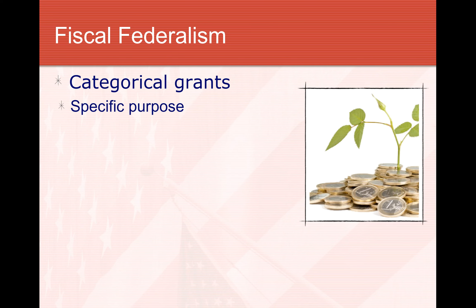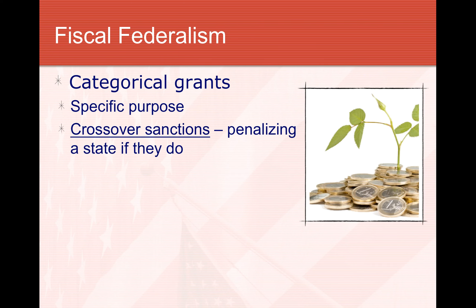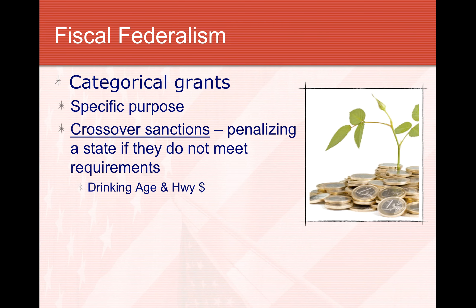So if the federal government is concerned about infrastructure, they might create grants related to bridges. These grants often come with requirements, such as crossover sanctions — penalties if a state doesn't meet a requirement. For example, states are requested to change their drinking age to 21. If it's not at 21, they may not receive as much highway funding from the categorical grants created for that purpose.